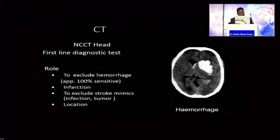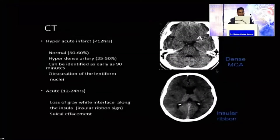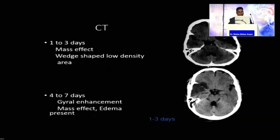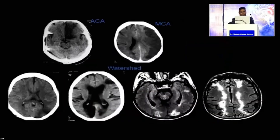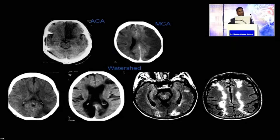CT scan is used for the exclusion of hemorrhage. If we can find a hyperdense MCA sign, that assures the patient may need intervention. If we delay, there will definitely be a formed infarct after two days. Imaging should be read on the basis of territory — ACA, MCA, PCA, or posterior circulation like cerebellar, ICA, PICA. If there is a watershed infarct, that indicates hemodynamic compromise — the patient may have occlusion from the arch of aorta to the brain.